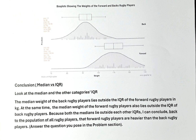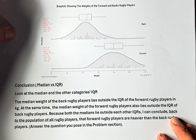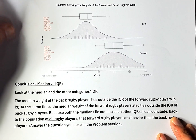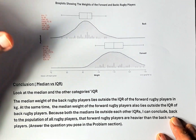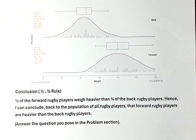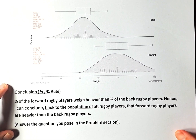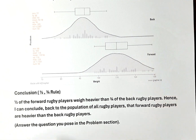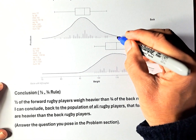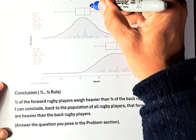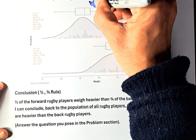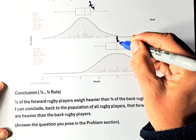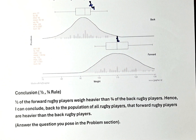Now we're going to do the next conclusion, called the half-three-quarter rule. This is to supplement what you have said before. The half-three-quarter rule looks at the median — which represents the half — and the upper quartile of the other category, which represents three-quarters. If the half is bigger than three-quarters, then we can say the forward is heavier than the back.